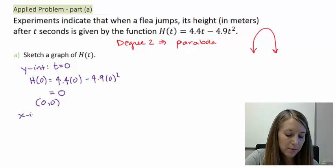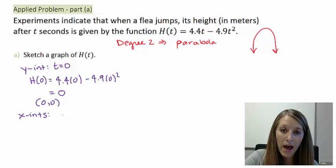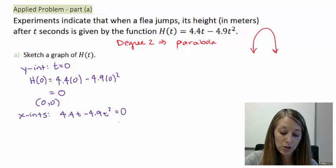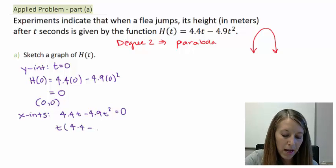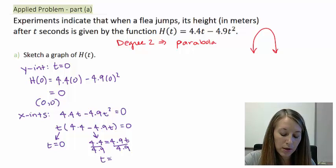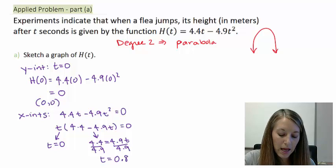If we want to figure out the x-intercepts, there should be two of them because it's degree 2. We set our function 4.4t minus 4.9t squared equal to 0. This is a degree 2. We have a common factor of t, so I'm going to solve it using the factoring method. Factor out t gives me t(4.4 minus 4.9t). Set each of those equal to 0. The first part gives us t equals 0. The second one, if I set it equal to 0, I get 4.4 equals 4.9t. I move my 4.9 to the other side. Divide by 4.9.